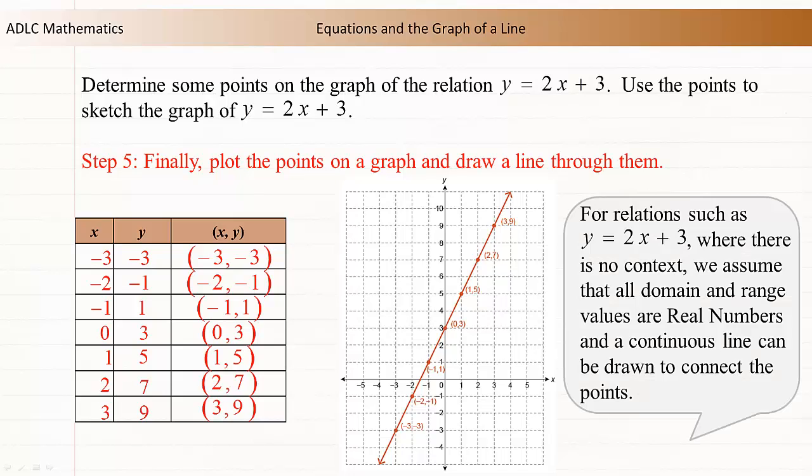For relations such as y equals 2x plus 3, where there is no context, we assume that all domain and range values are real numbers and a continuous line can be drawn to connect the points.